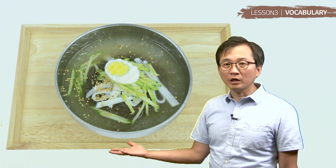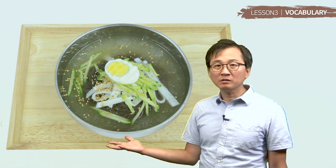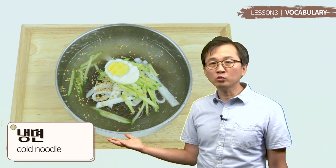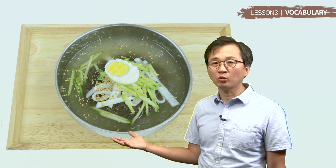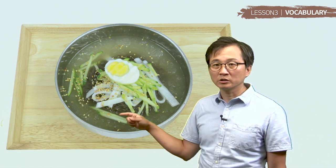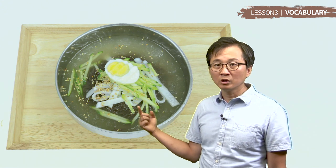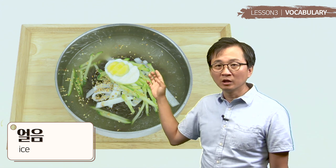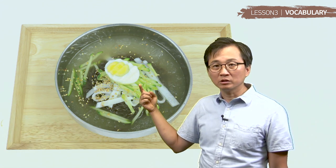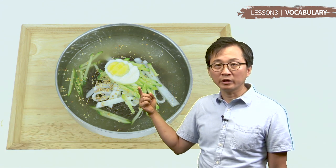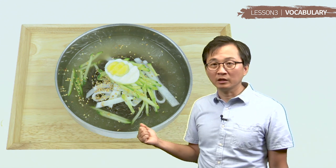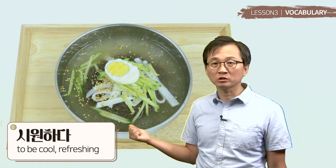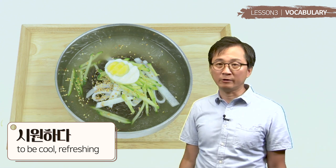그 다음에 이건 뭐예요? 이거는 냉면이에요. 냉면 literally means cold noodle. It's a Korean style cold noodle. 여기 you can see noodle here. 그 다음에 you can even see some ice here. 얼음. 그 다음에 이것도 계란이네요. 이거는 hard-boiled egg. 이렇게 여름에 먹어요. 시원해요. 시원하다 그러면 to be cool. 그래서 시원한 음식이에요.